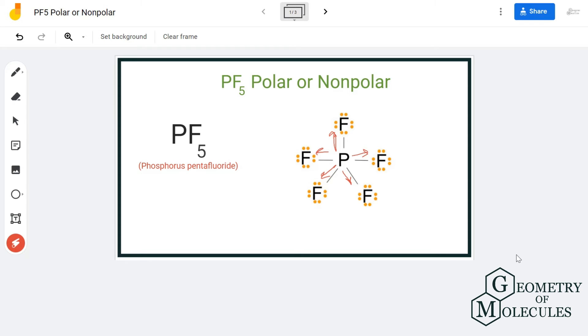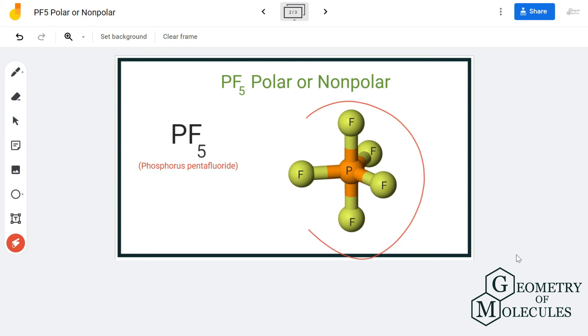Because of the symmetric distribution of the atoms, all the dipole moments that will be from phosphorus to fluorine atoms will get nullified. As all these dipole moments are nullified, there will be no uneven distribution of charges in the molecule.